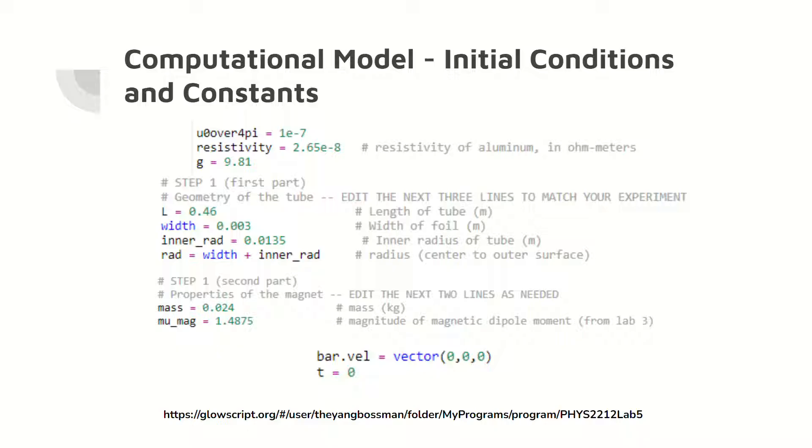Here are the initial conditions and constants for the computational model. These include the properties of the tube and the magnet found in the observational component of the lab. Note that the initial velocity of the magnet is the zero vector as it drops from rest.